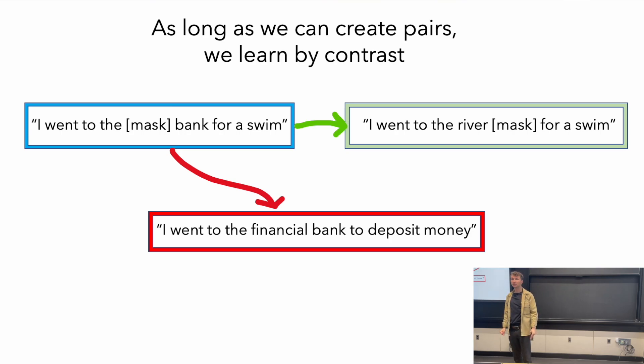Then we'll train this contrastive setup to identify the positive pair among the negative pairs. This works really well for language as well. So contrastive learning is a very general way of learning meaning in a lot of different modalities.